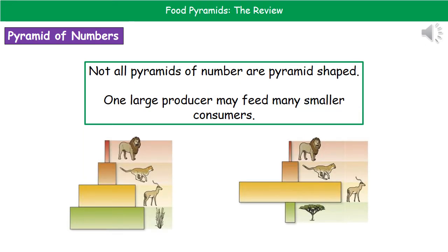One thing to bear in mind is that when we're drawing a pyramid of numbers, they're not always going to be pyramid-shaped. What we may find is that we've got one large producer, like a tree, which can then feed many smaller consumers. So while some will be pyramid-shaped, others will not be. Just trust the numbers that you're given in the question to draw it as it says.